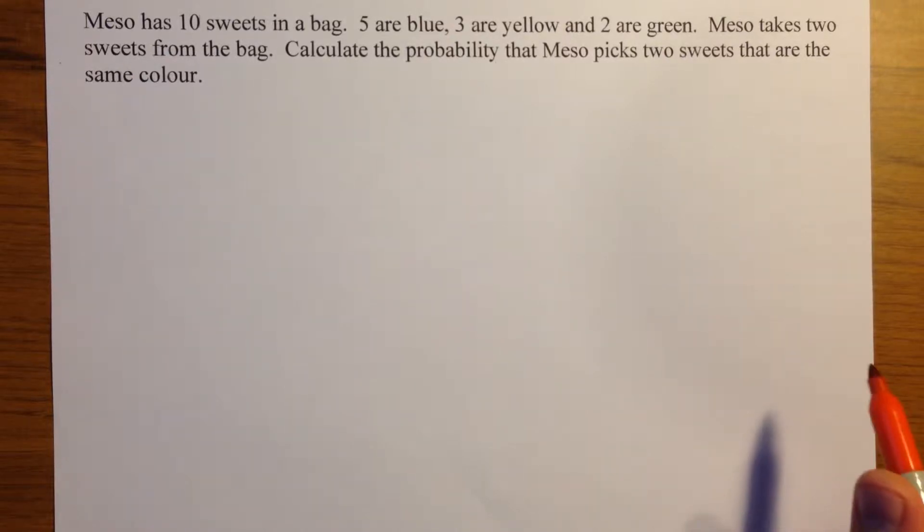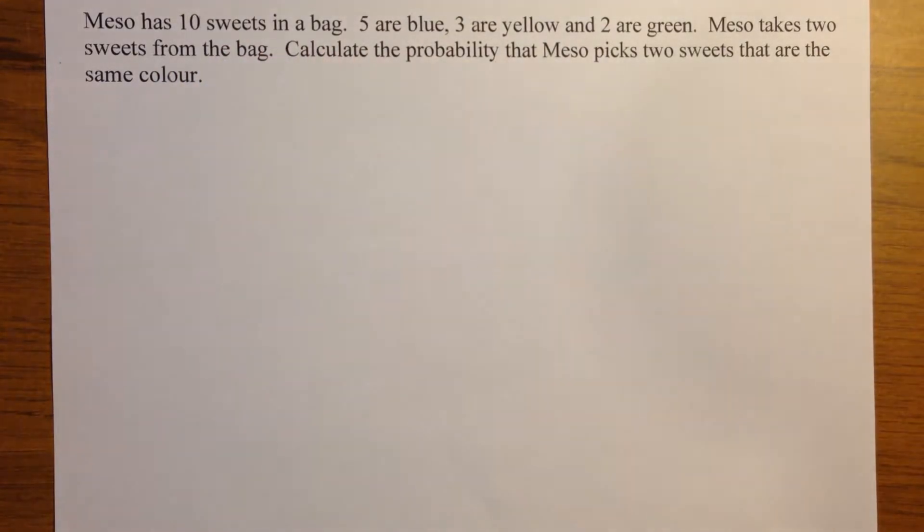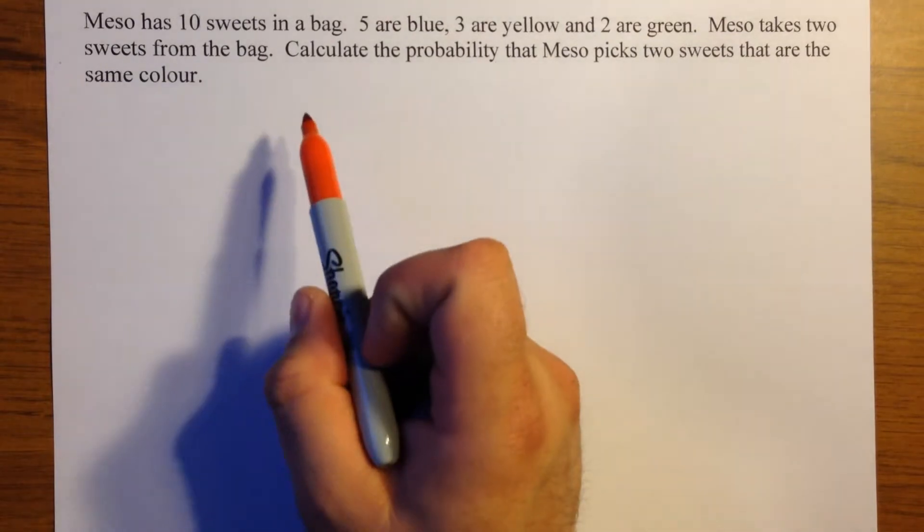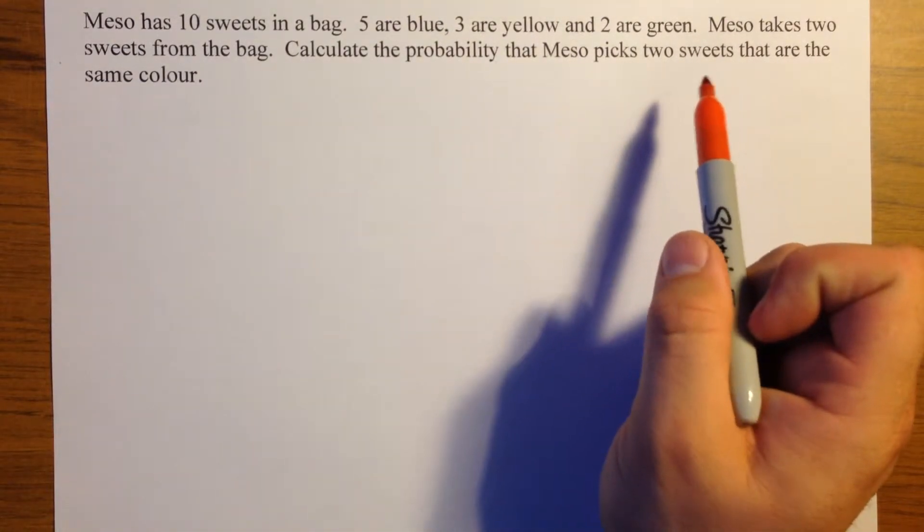OK, this is a more complicated tree diagram question. Miso has ten sweets in a bag, five are blue, three are yellow, two are green. Miso takes two sweets from the bag, calculate the probability that Miso picks two sweets that are the same colour.